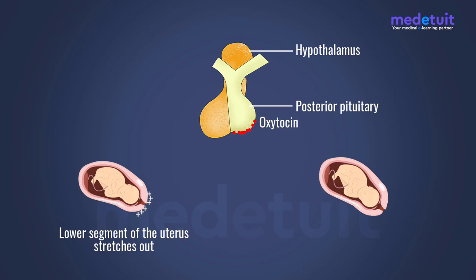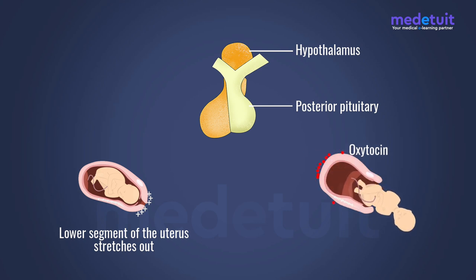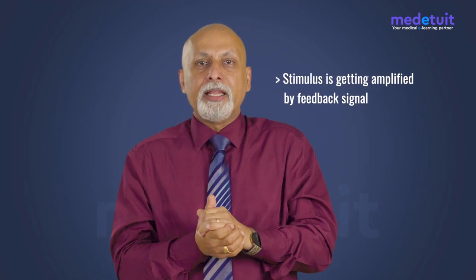Oxytocin travels through the bloodstream back to the uterus, where it acts on the upper segment of the uterus. Once the upper segment contracts further, the baby descends further. So the descent of the baby stimulates oxytocin release, and oxytocin further increases the descent of the baby by inducing contraction of the upper segment of the uterus. The stimulus is therefore getting augmented or amplified by the feedback signal — a true example of positive feedback.